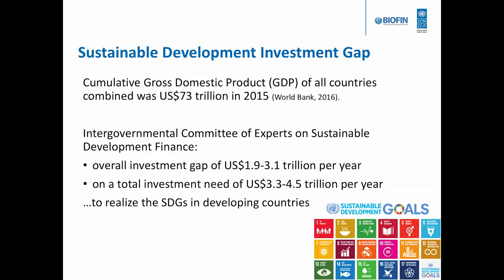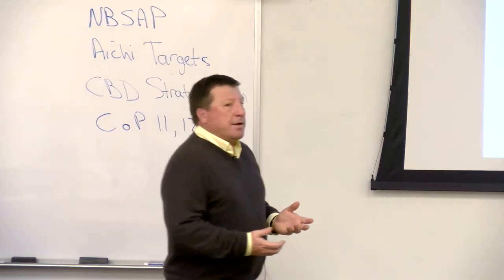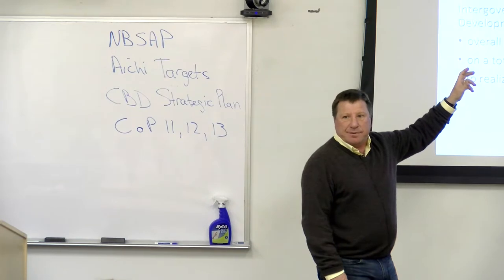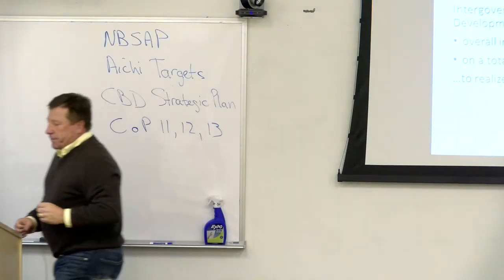What we don't know is the return on our investment because we don't know how much we're investing. The biodiversity finance part deals with how much it's going to cost and how much we need to invest. We're trying to change that dialogue from a cost center to an investment — investing in the future of the planet. So identifying the biodiversity finance gap is something the CBD tried to do back at COP10 in Nagoya.